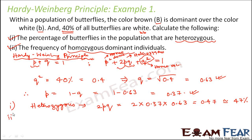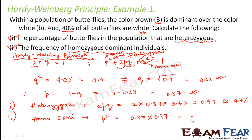The second part asks for the frequency of homozygous dominant individuals. Homozygous dominant is given by p² = 0.37 × 0.37 = 0.14. So this is how we calculate the percentage of heterozygous and homozygous dominant individuals when we know the percentage of homozygous recessive.